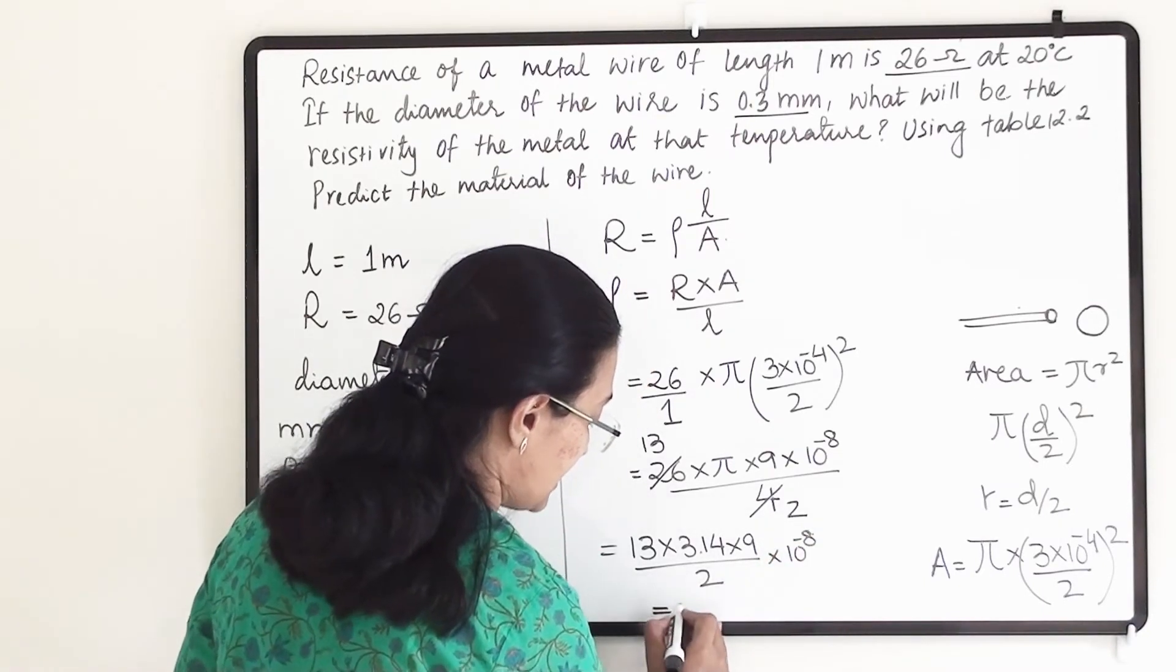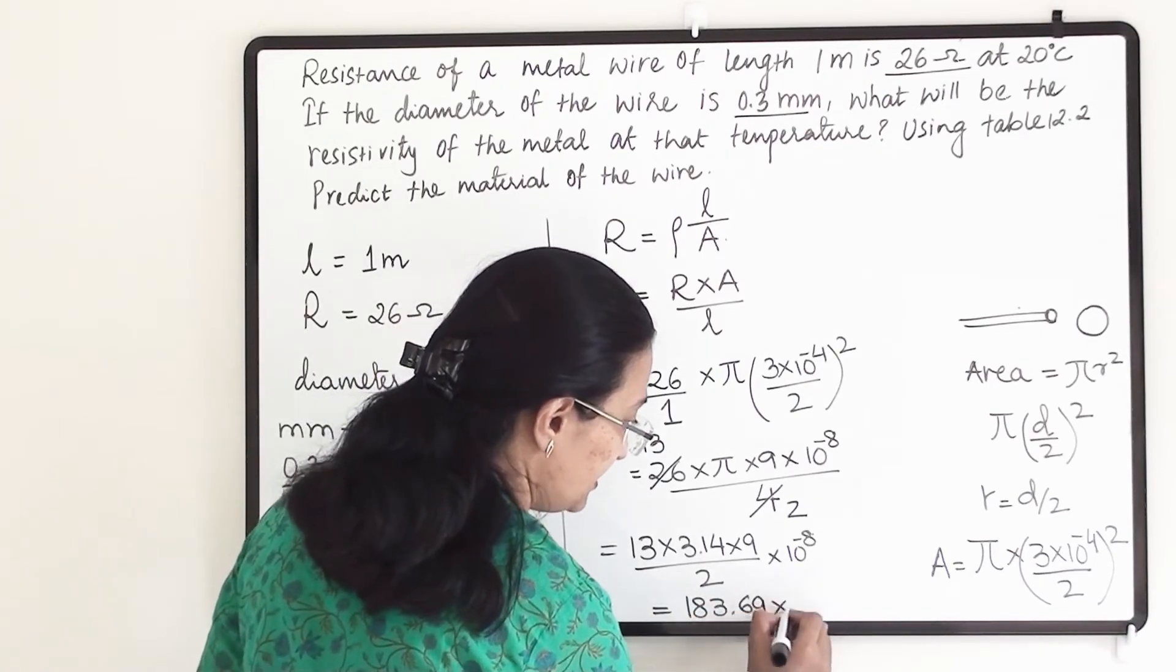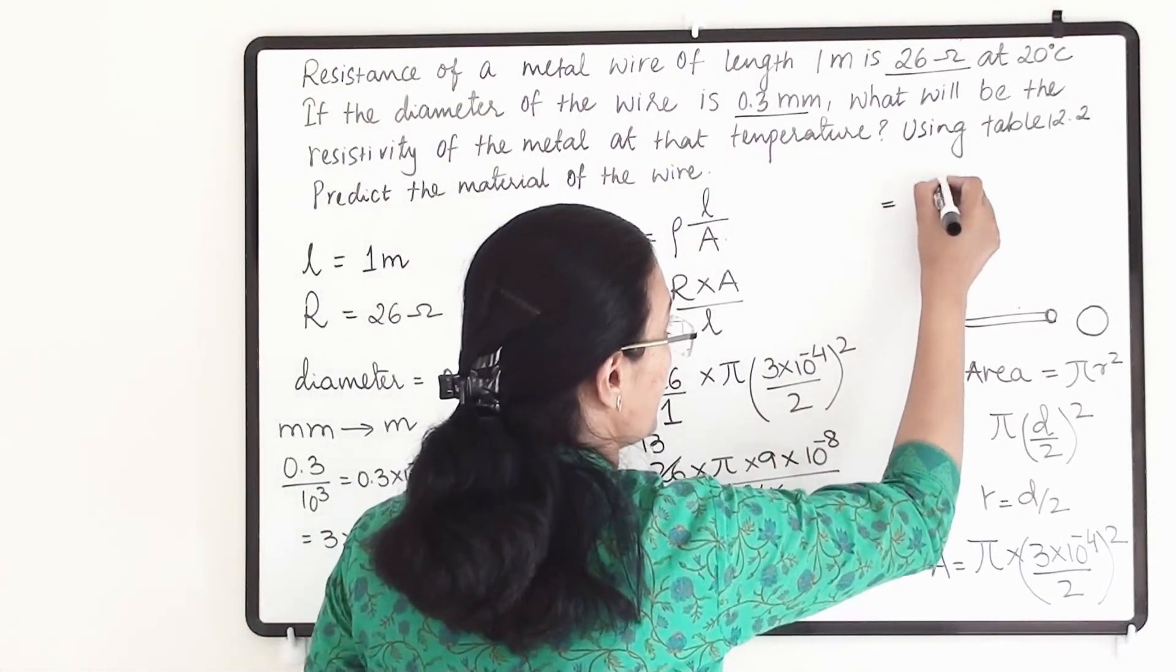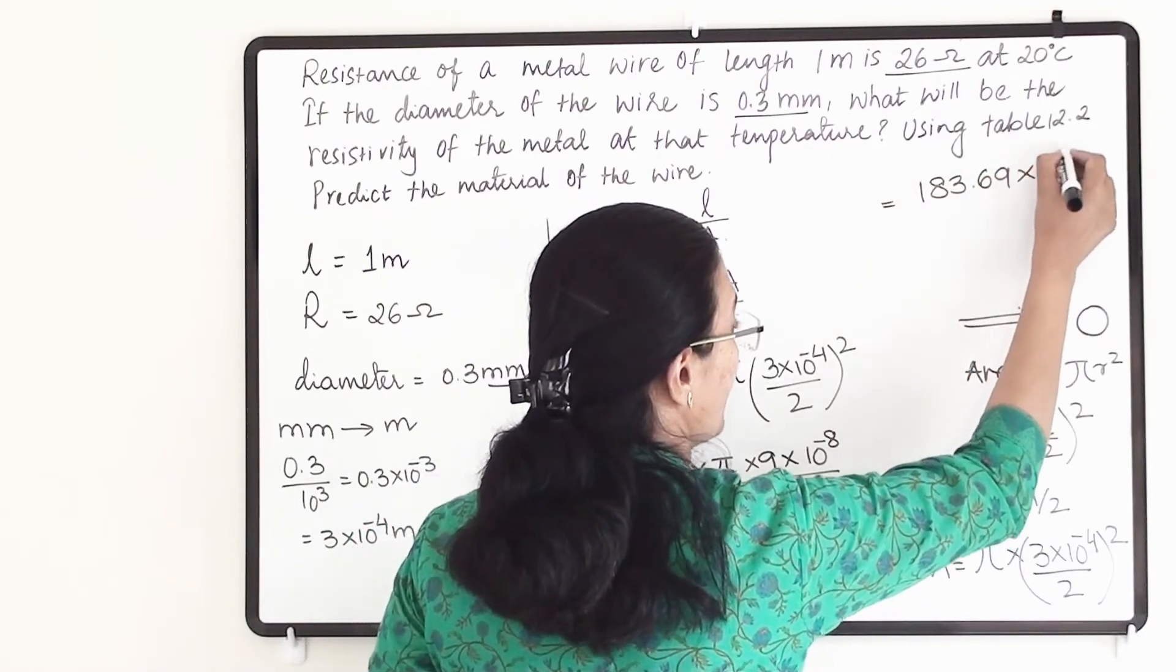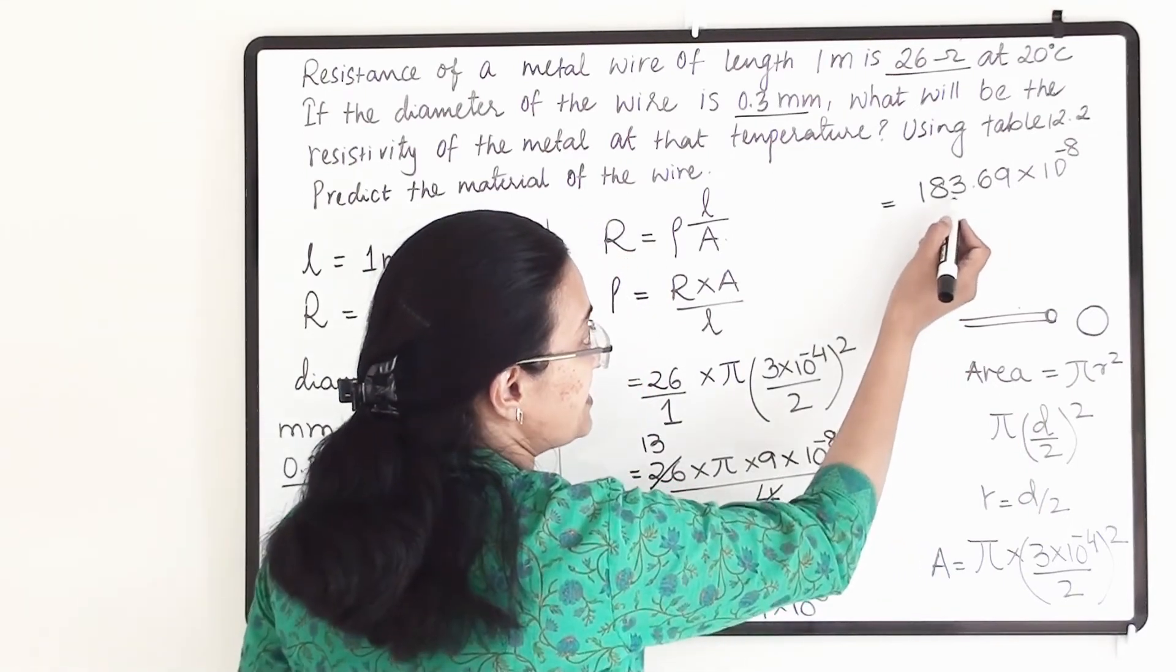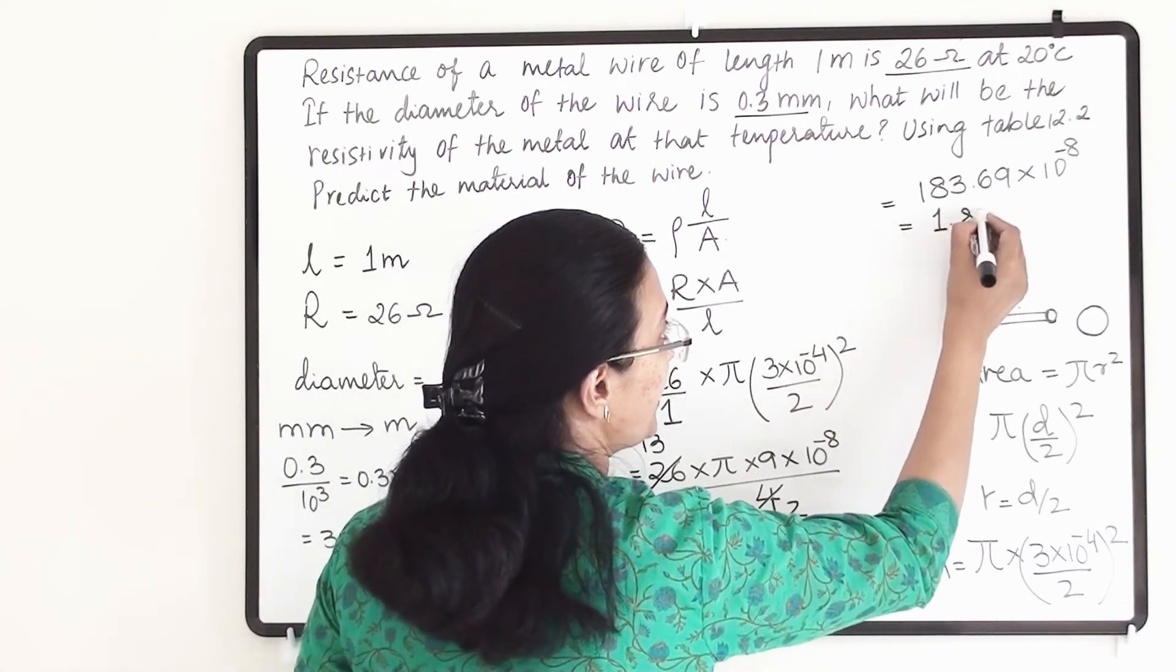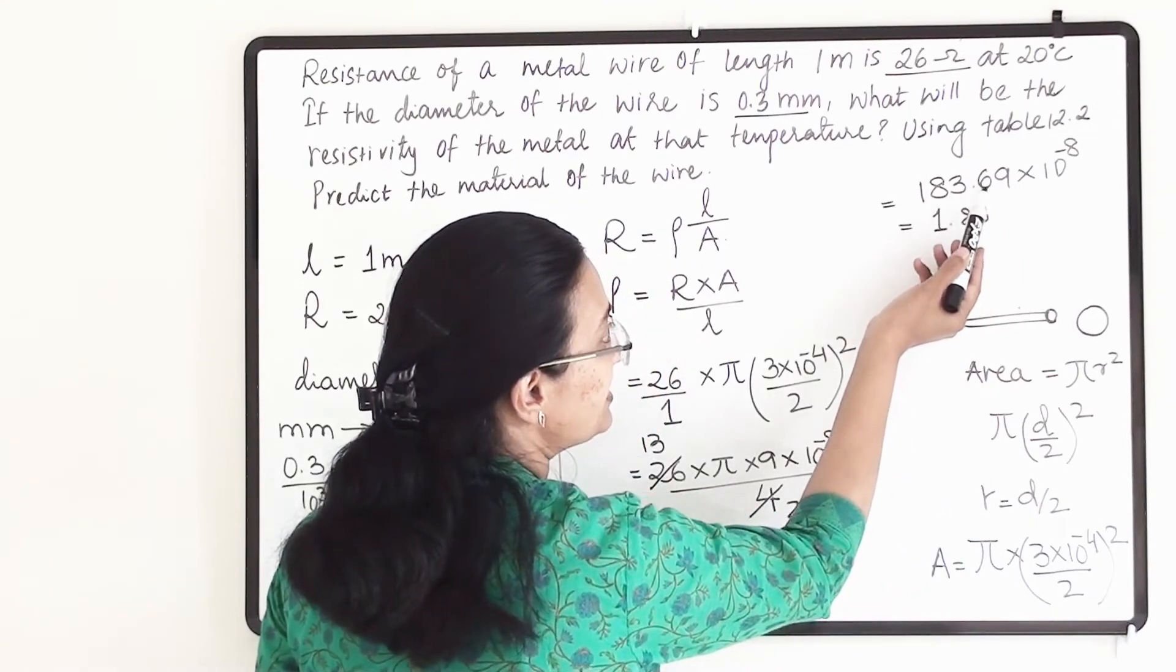If I write this as 183.69 into 10 raise to minus 8, and shift this decimal point towards the left side one and two decimal points, I can write 1.83. I can round off this figure because here it is 6, so instead of 3 I write 4.